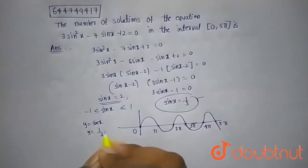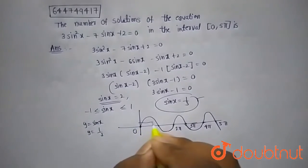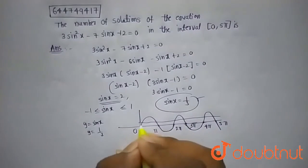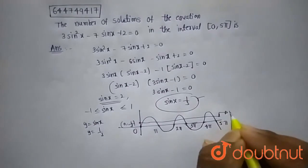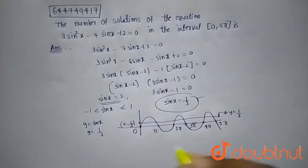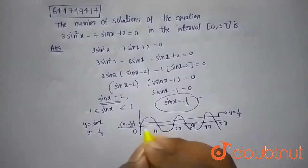Now if you draw the graph of y = 1/3, this will be a horizontal line at y = 1/3. This is the y = sin x curve. Now if you observe these two curves,